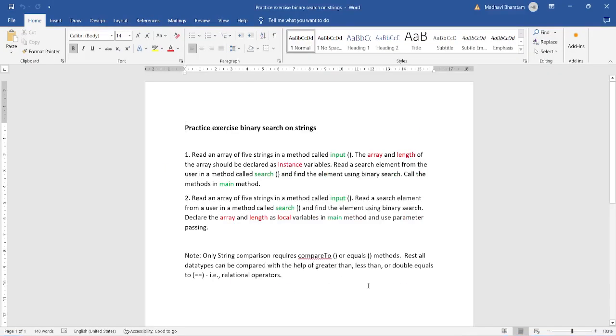Let's see a practice exercise here. Read an array of five strings in a method called input. The array and the length of the array should be declared as instance variables. Read a search element from the user in a method called search and find the element using binary search. Call the methods in main method. Now, second one is read an array of five strings in a method called input. Read a search element in a search method. Declare the array and the length as local variables in main method and use parameter passing. Now, compareTo or equals method should be used with string only. Rest all data types can be compared with the help of greater than, less than, or double equals to sign. That is relational operators.